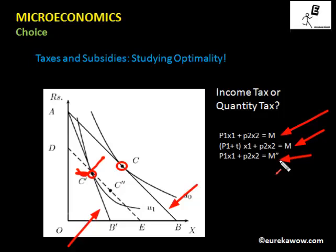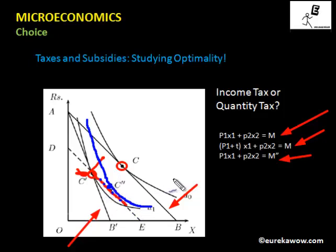Although C' lies on the dotted budget line and is affordable under income tax, it is not the optimal bundle. There is a portion of the dotted budget line that lies to the right of indifference curve U1, meaning there are affordable bundles that lie on a higher indifference curve. The point of optimality is C'', where the blue indifference curve is tangential to the dotted budget line — a higher indifference curve than U1.